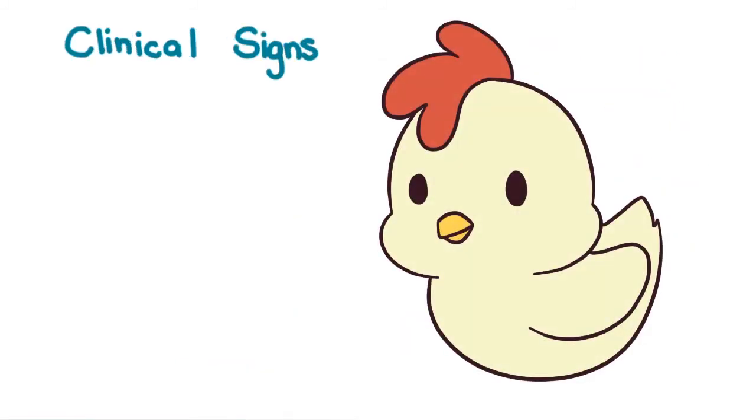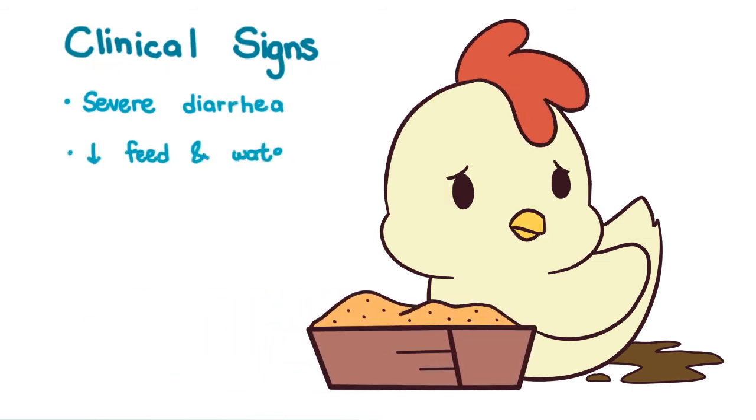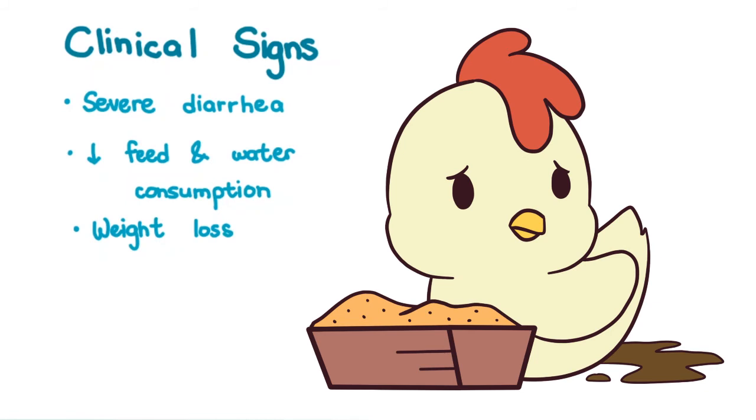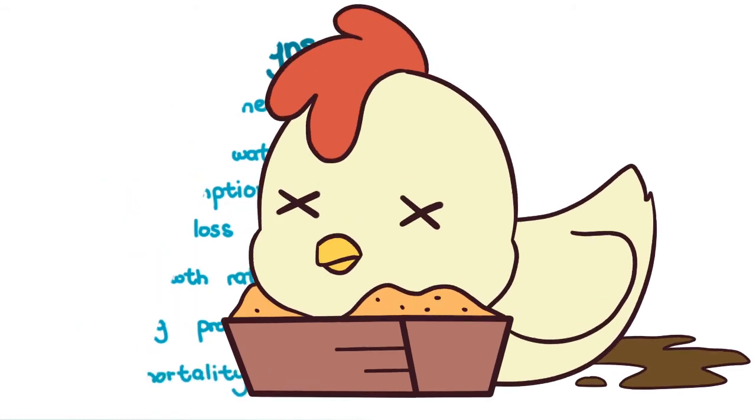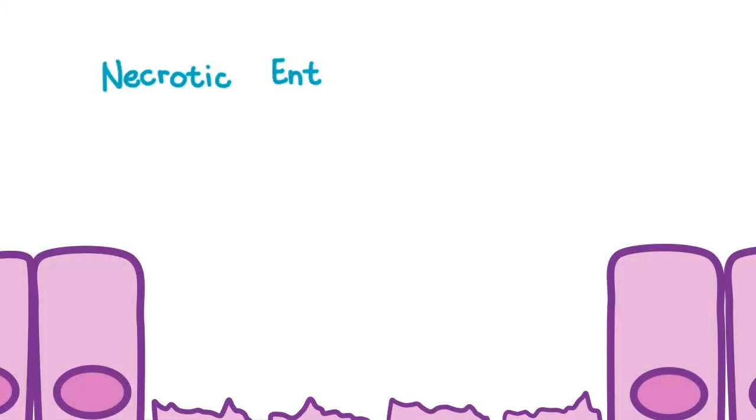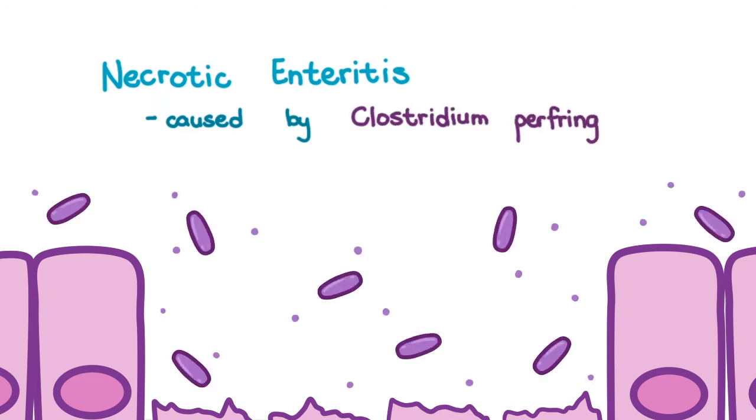Clinical signs of coccidiosis include severe diarrhea, decreased feed and water consumption, weight loss, decreased growth rate, decreased egg production, high mortality, and potentially necrotic enteritis caused by Clostridium perfringens, which can occur secondary to coccidiosis.